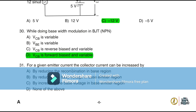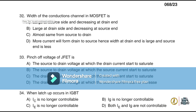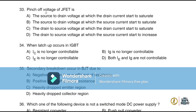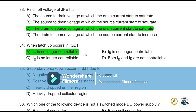Question 31: For a given emitter current, the collector current can be increased by reducing recombination in the base region. Question 32: The width of the conduction channel in a MOSFET is larger at the source side and decreases at the drain end. Question 33: Pinch-off voltage of a JFET is the drain-to-source voltage at which the drain current starts to saturate. Question 34: When latch-up occurs in an IGBT, the collector current is no longer controllable.